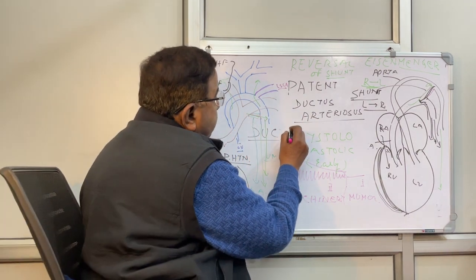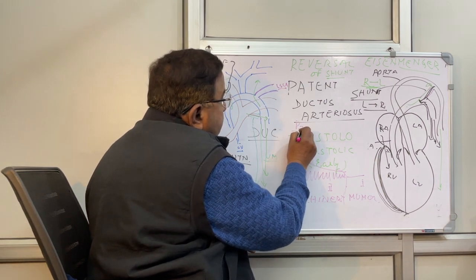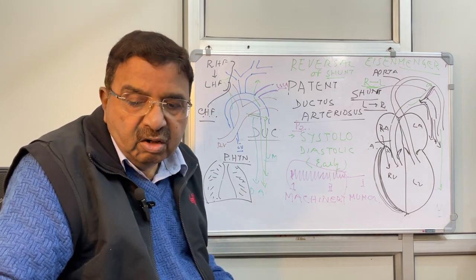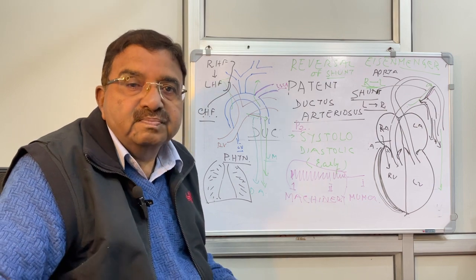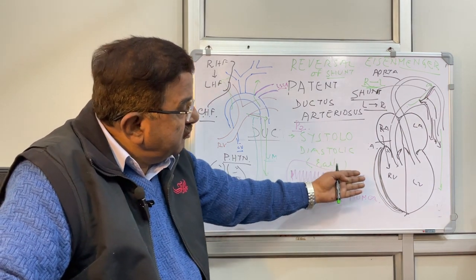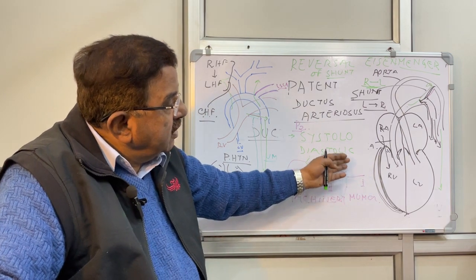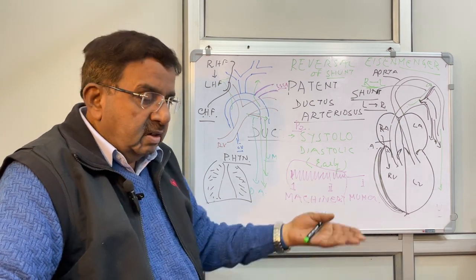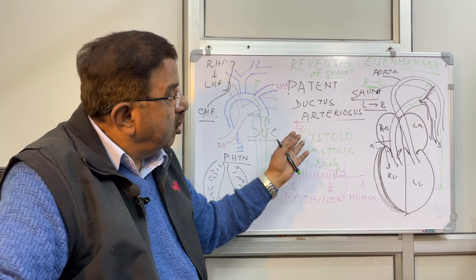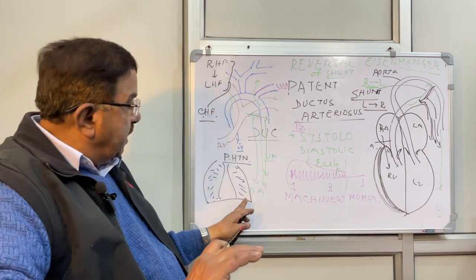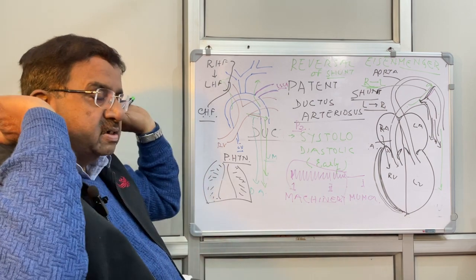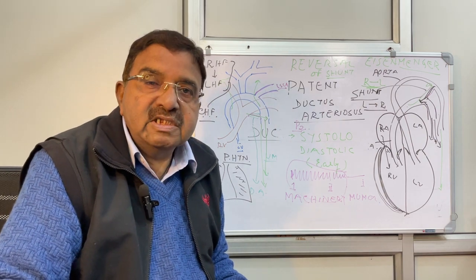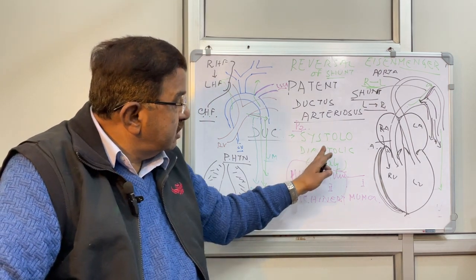The pulmonic component P2 will be loud, indicating the possibility of pulmonary hypertension. There will be features of right ventricular hypertrophy, features of right heart failure like raised JVP, liver enlargement, edema feet, and later breathlessness with bilateral basal crepitations on auscultation from the back of the chest.